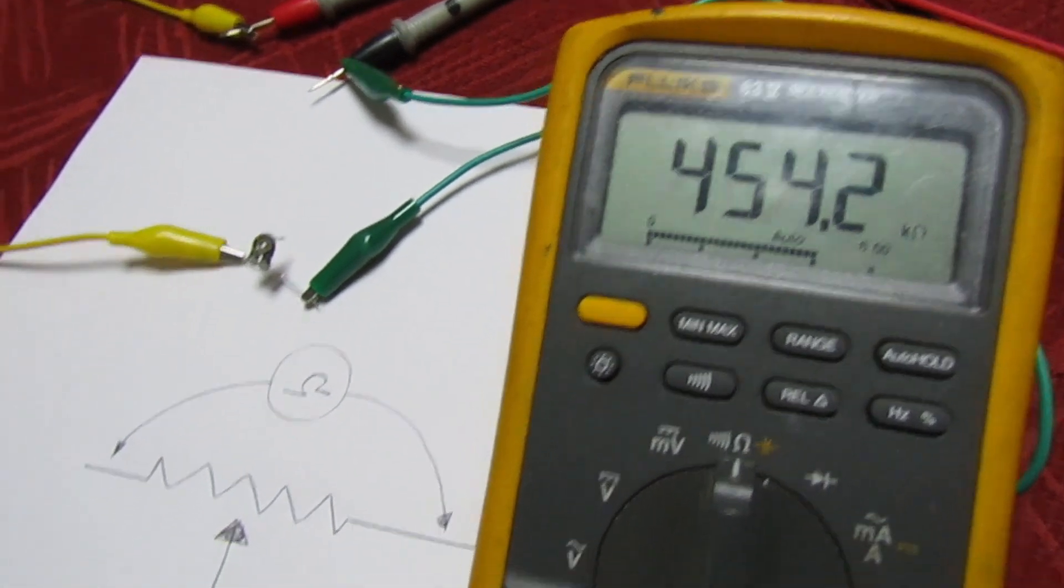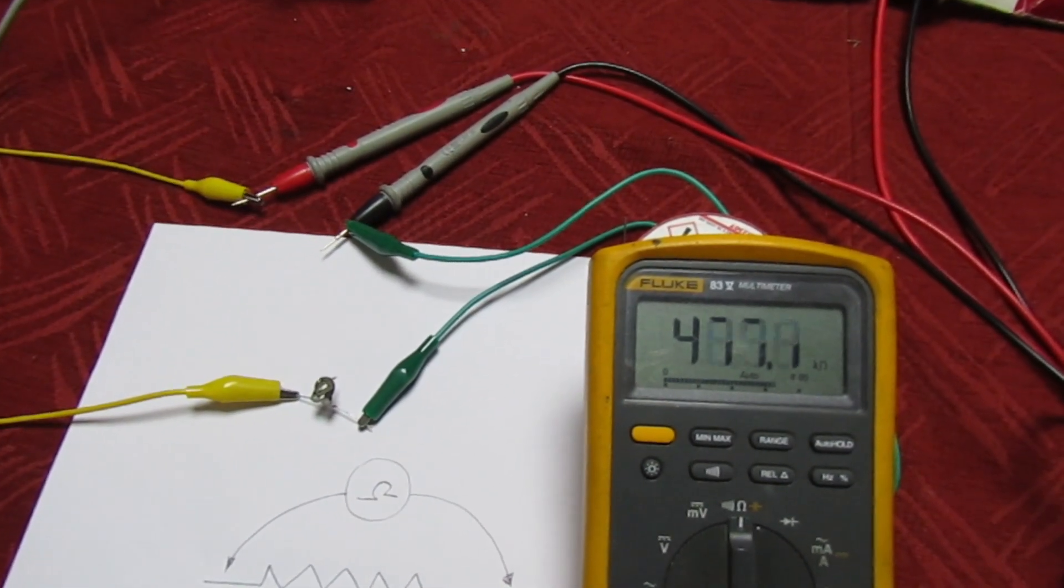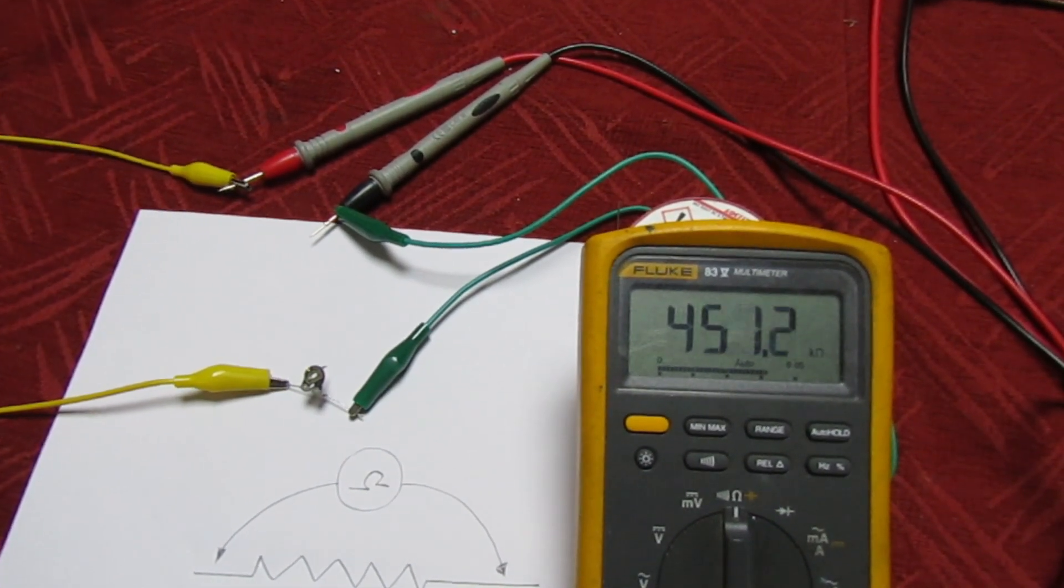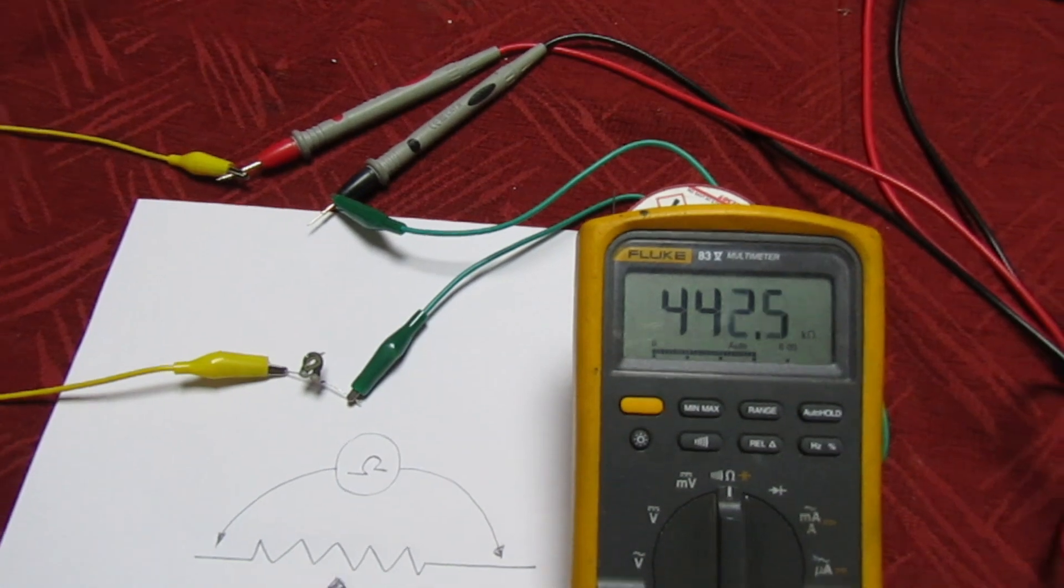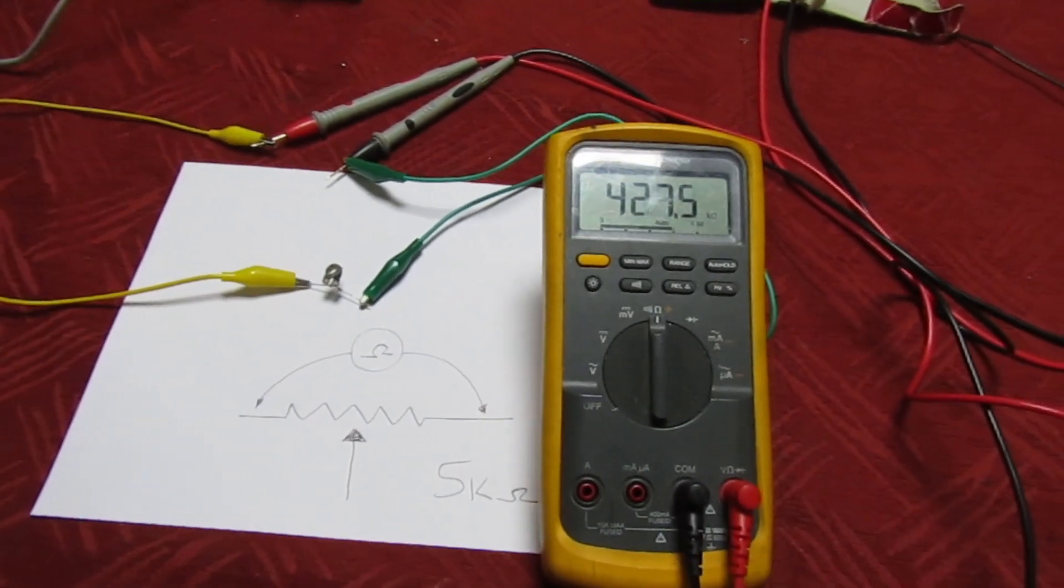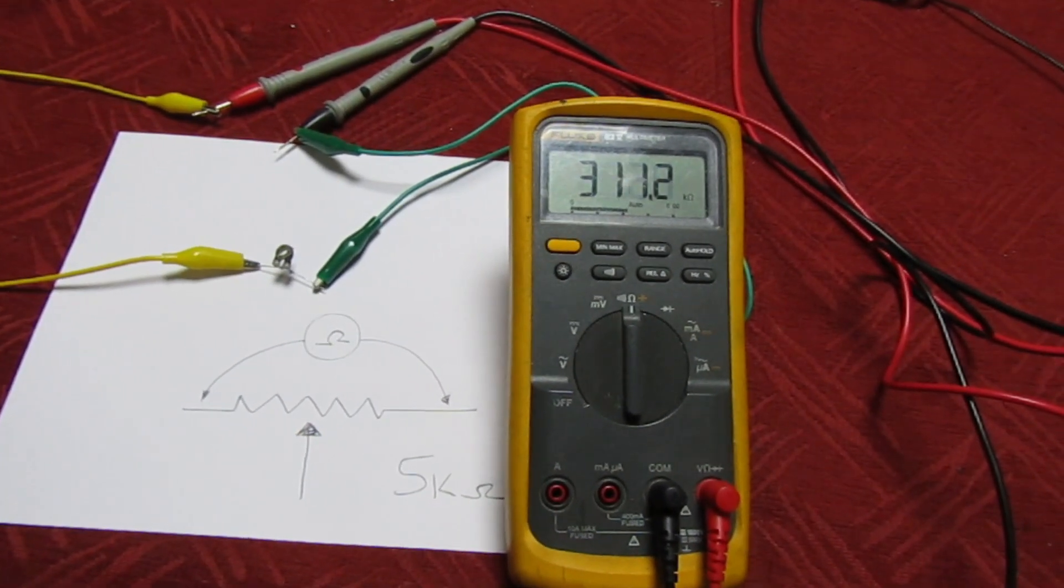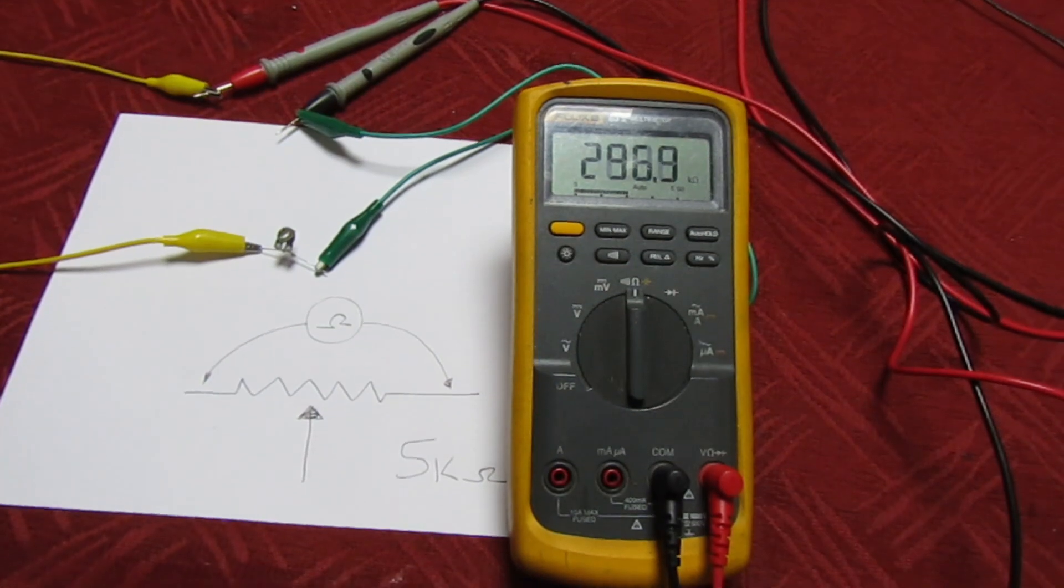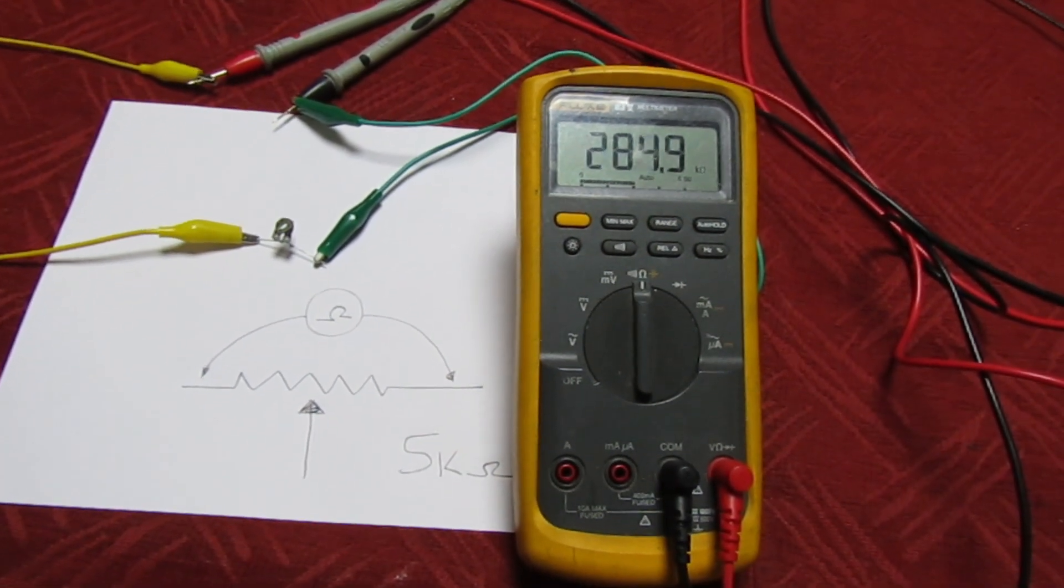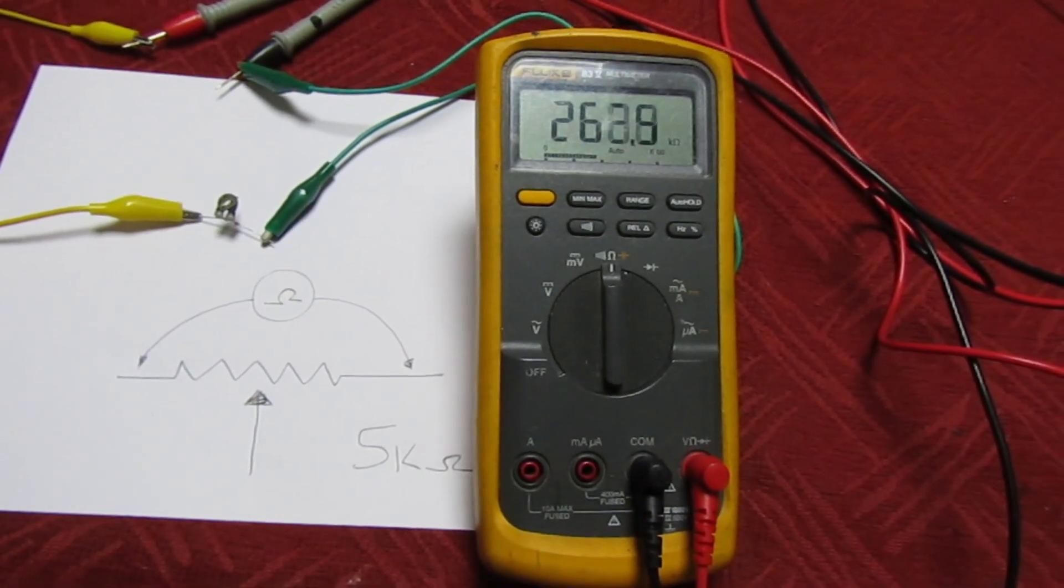And that is where the intermittent fault was coming from. Now it's 270K, 250...